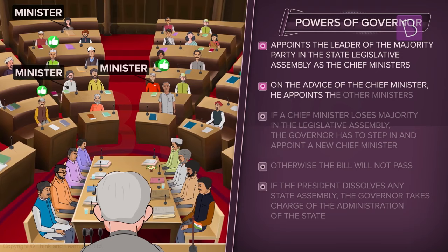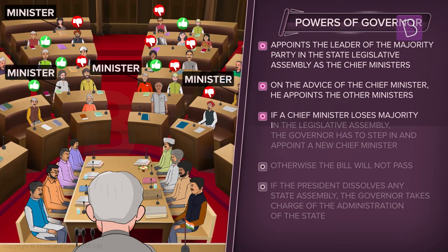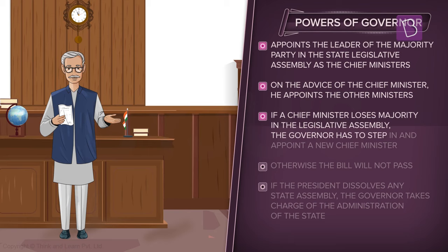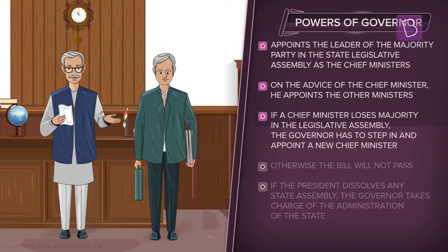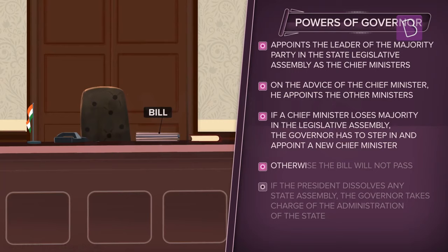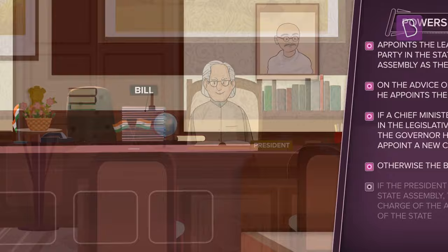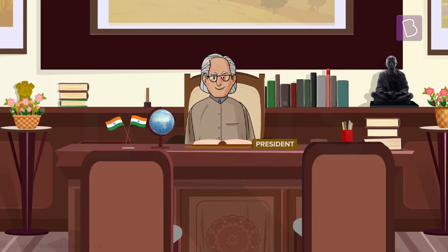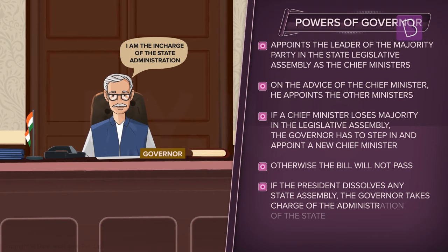Whenever an old chief minister loses his majority in the legislative assembly, the governor will have to step in and appoint a new chief minister based on the scenario in the legislative assembly. The governor is also supposed to read every bill passed by the state legislative assembly and approve it. Otherwise, the bill passed by the assembly cannot be implemented. When the president dissolves the state government and imposes president's rule, the governor takes charge of the administration of the state.